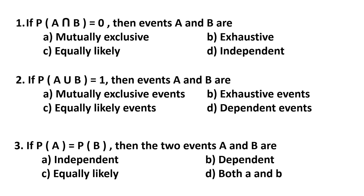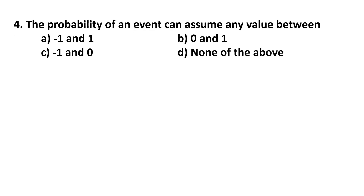Basic rules and properties of probability. Question 4. The probability of an event can assume any value between: minus 1 and 1, 0 and 1, minus 1 and 0, or none of the above.